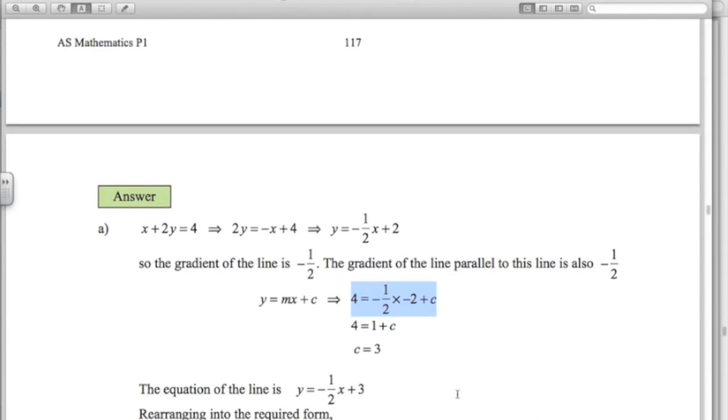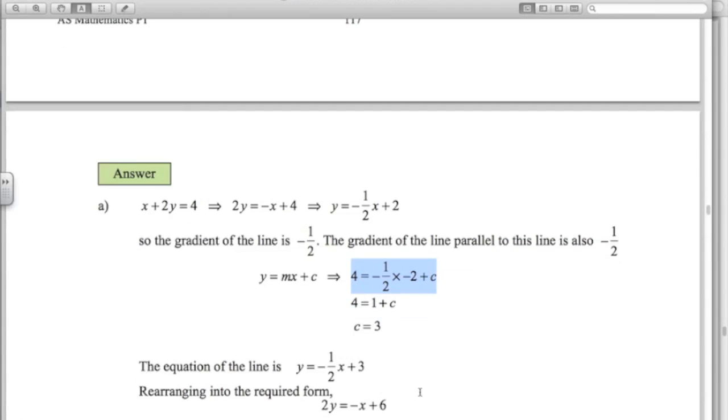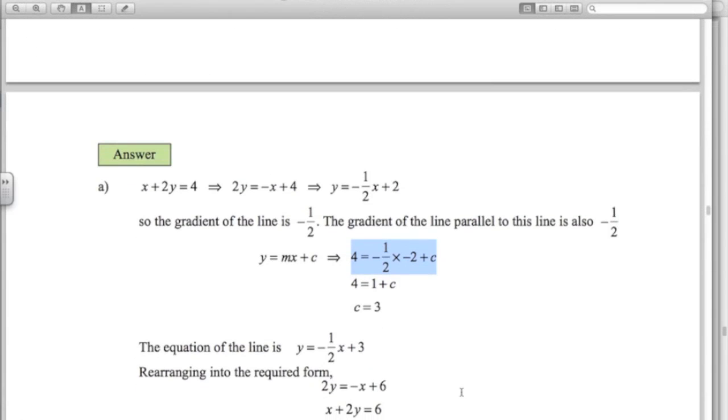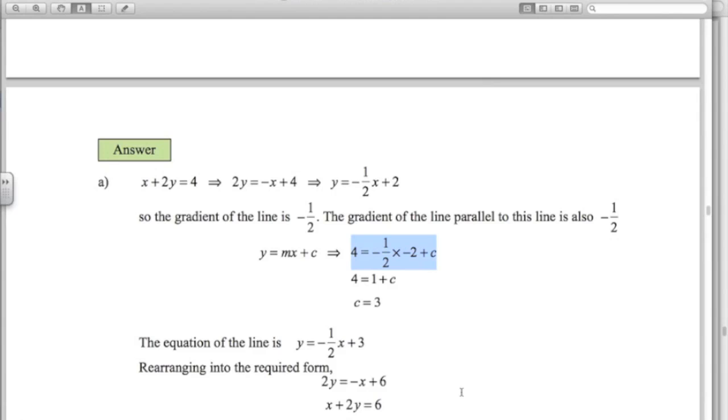Now that's not in the form that we were asked for. We want to get rid of this fraction here, so I've got to multiply every term by 2. Just be careful that you multiply the 3 by 2 also. And add x to both sides, and there we've got it. x plus 2y equals 6. That's the form we're looking for.